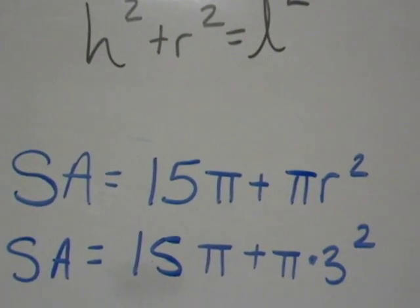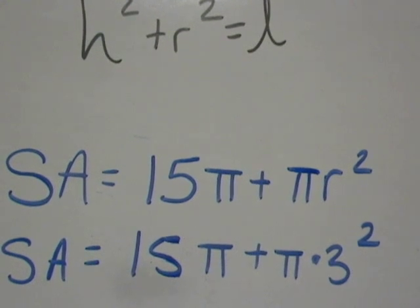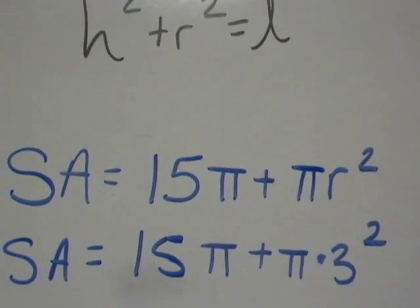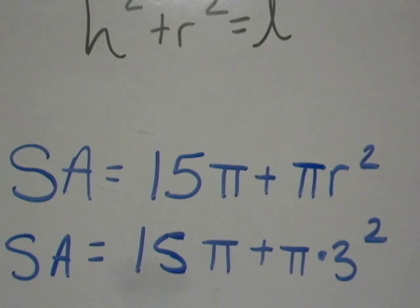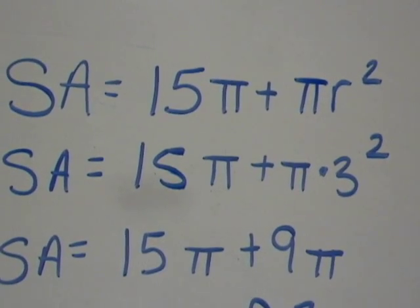Now let's do the surface area. Surface area will be that lateral area that we just found, 15 pi plus pi R squared, the area of the base. The radius again is 3. 3 squared is 9, so now I have 15 pi plus 9 pi.